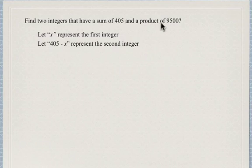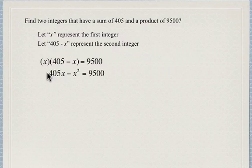Now, we're also told that the product of the two integers is 9,500. So we're going to write this as the product of x and 405 minus x. So we write that as x times 405 minus x equals 9,500. We're going to expand using the distributive property. x times 405 is 405x, and x times negative x is negative x squared.